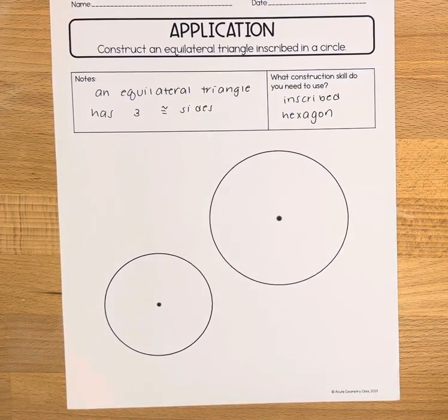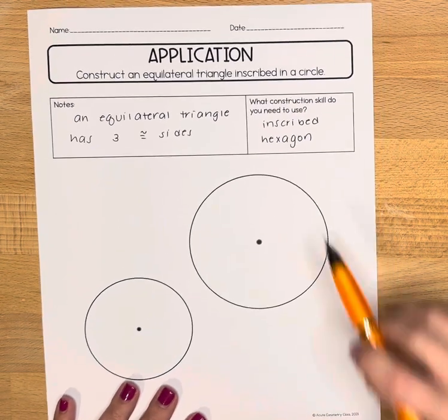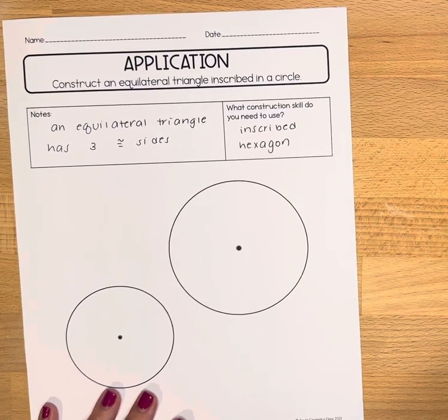In this video I'll be constructing an equilateral triangle that's inscribed in a circle. We're going to go through one example of this here and we're going to base it upon the inscribed hexagon construction.